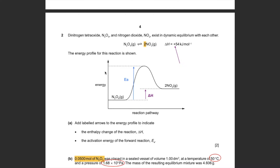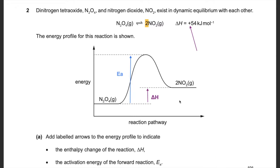This is the energy profile for this reaction. We're asked to label the arrows to indicate the enthalpy change of the reaction — this is the energy difference. The arrow is facing upwards because we're gaining energy; the product is above the reactant. If it were the opposite, with reactants above products, the arrow would face down because we'd be losing energy.